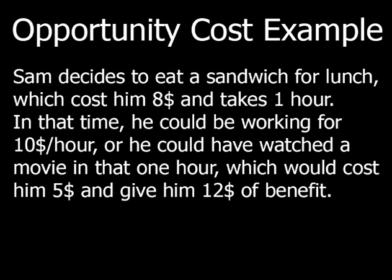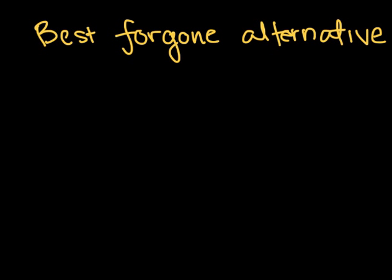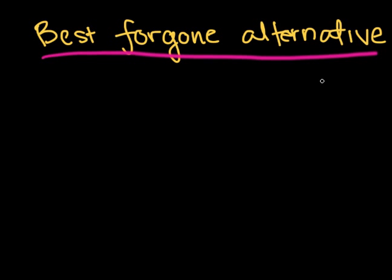We want to find the opportunity cost of Sam eating the sandwich — that is, what is Sam giving up in dollar value to eat the sandwich? As you might have remembered, opportunity cost depends on the best foregone alternative.